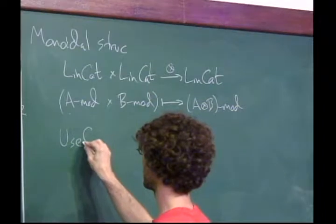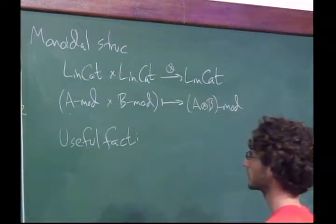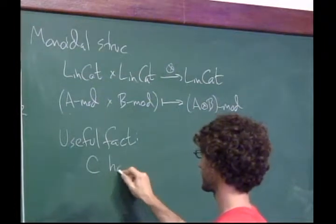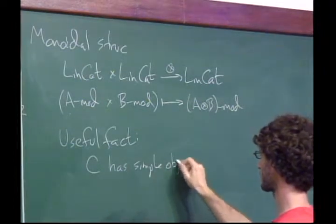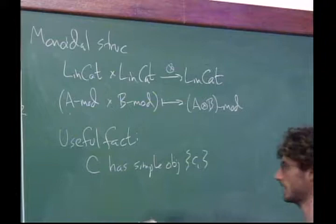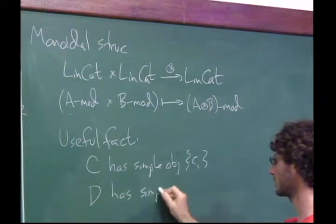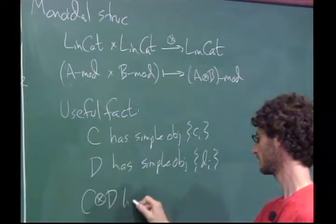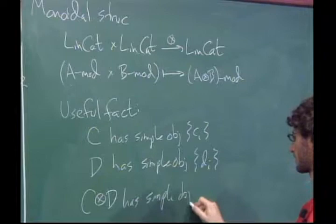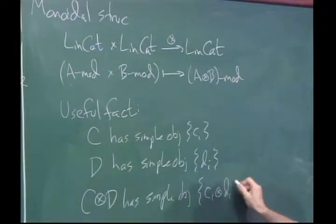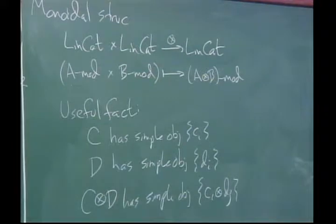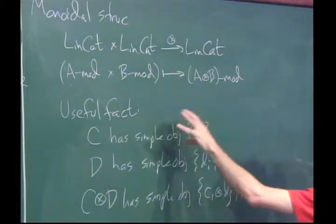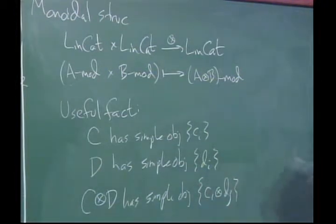Another useful fact: if C is a linear category with simple objects C_i and D is another linear category with simple objects D_j, then the tensor product has simple objects given by formal elementary tensors C_i tensor D_j. This is just the categorified version of the statement that if you have a basis for one vector space and a basis for another, you have a basis for the tensor product that looks like those elementary tensors.